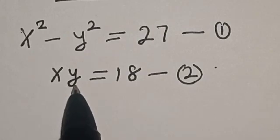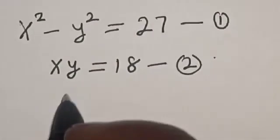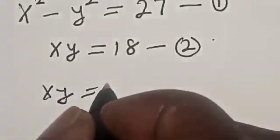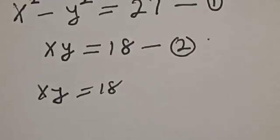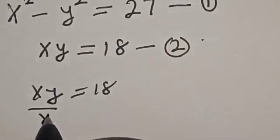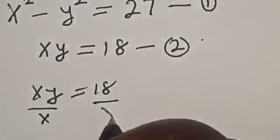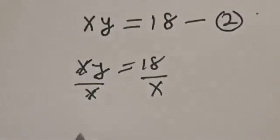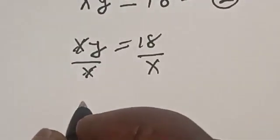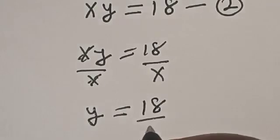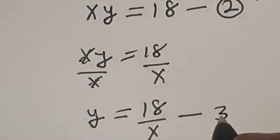From equation 2, let's make y the subject of the formula. That is, xy is equal to 18. Now let's divide both sides by x, so x cancels out and y is equal to 18 divided by x. Let's call this equation 3.